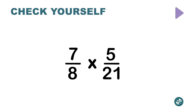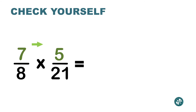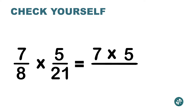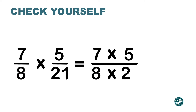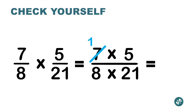Let's multiply 7/8 times 5 over 21. Top with top: 7 times 5 — but I'm not going to multiply yet, just write it out. Bottom with bottom: 8 times 21 — again, just writing it out. Now pick a number on top and one on the bottom: 7 and 21 can both be divided by 7. So 7 divided by 7 is 1, and 21 divided by 7 is 3.